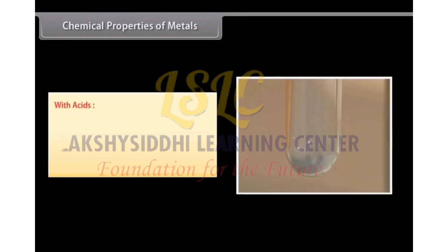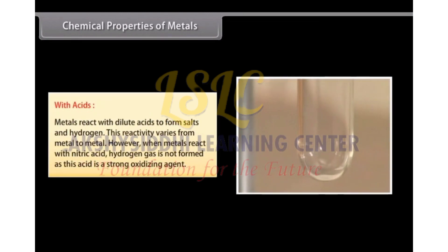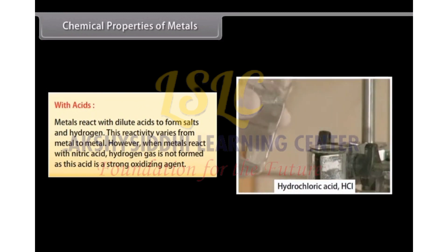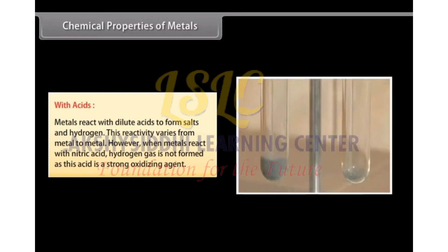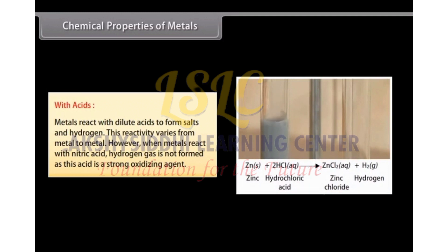With acids: Metals react with dilute acids to form salts and hydrogen. This reactivity varies from metal to metal. However, when metals react with nitric acid, hydrogen gas is not formed as this acid is a strong oxidizing agent.